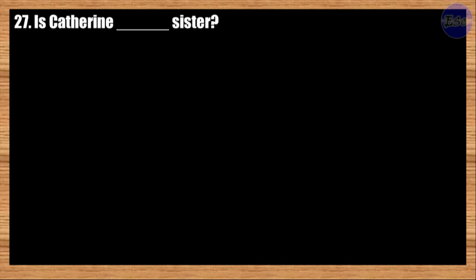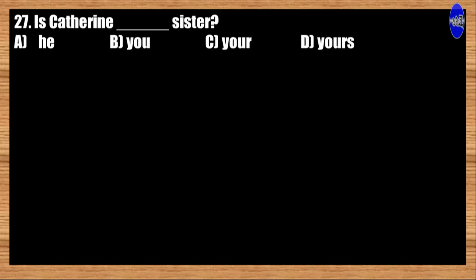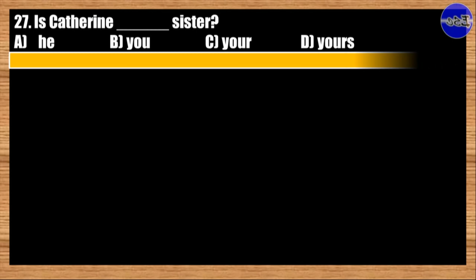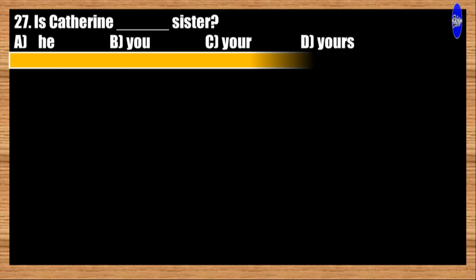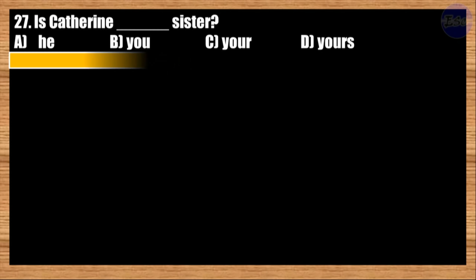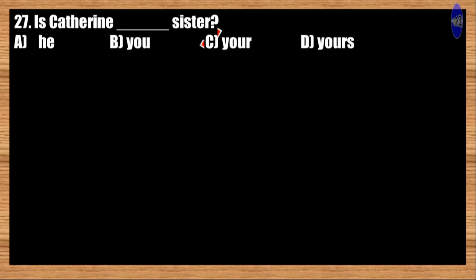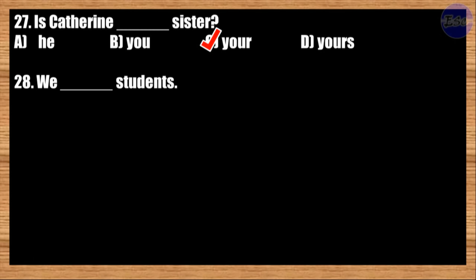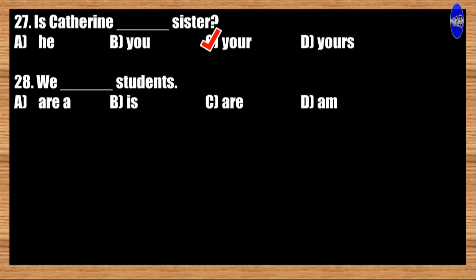Number twenty-seven: Is Catherine blank sister? A: he; B: you; C: your; D: yours. The best answer is option C. Is Catherine your sister?